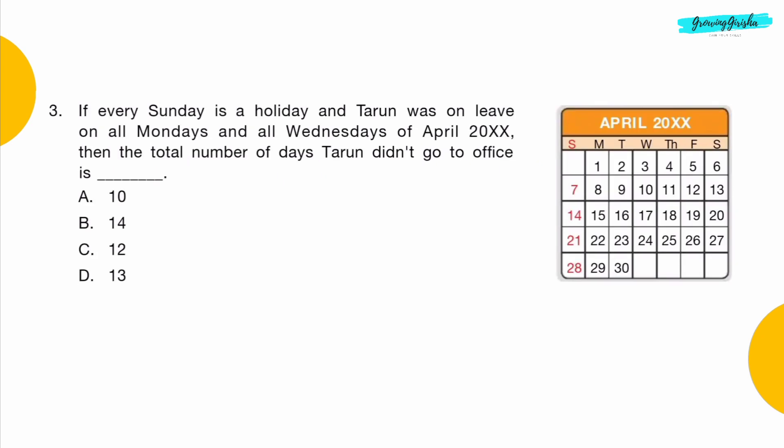Question 3: If every Sunday is a holiday and Tarun was on leave on all Mondays and all Wednesdays of April 2000XX, then the total number of days Tarun didn't go to office is dash. Option D: Thirteen.